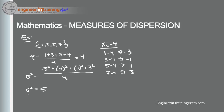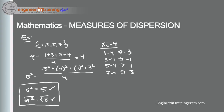The population standard deviation is simply the square root of the population variance, which is the square root of five. So the population variance is five and the population standard deviation is √5.